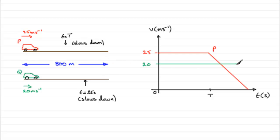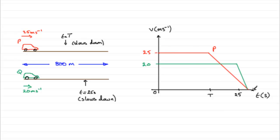The graph is going to look something like this — they both finish at the same time, and this point here is where T equals 25, so I've marked in 25 there. So you've got something like this kind of diagram.